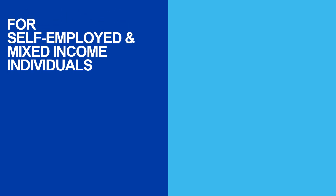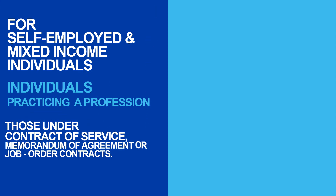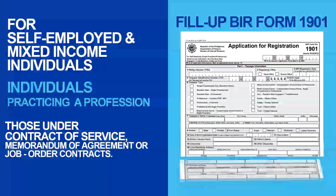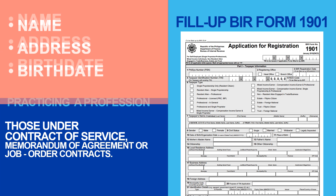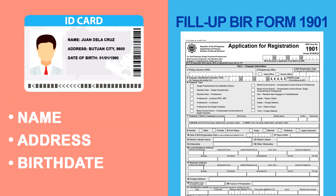These are the steps on how to get your TIN based on your purpose. First, for self-employed and mixed income individuals, individuals practicing a profession, and for those under a contract of service or COS, memorandum of agreement or MOA, or job order contract: fill up BIR Form Number 1901 and present the following attachments — any identification issued by an authorized government body that shows the name, address, and birth date of the applicant.